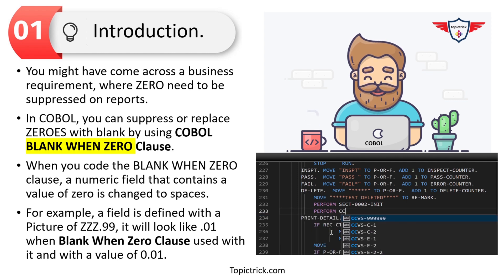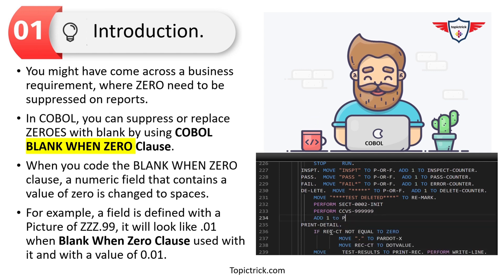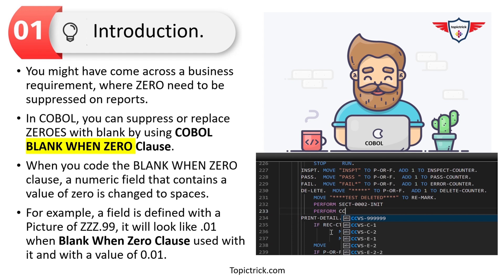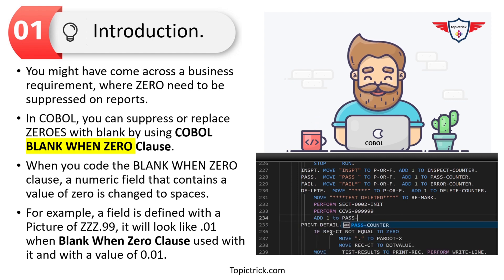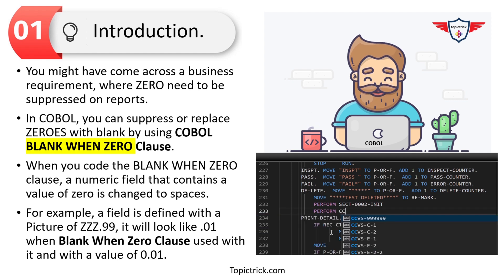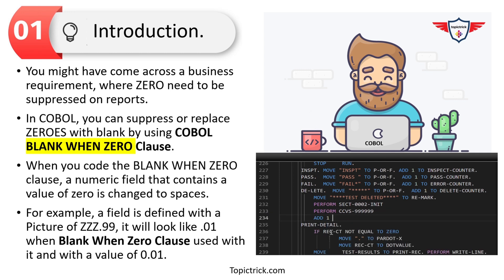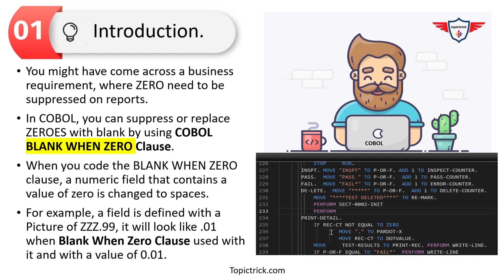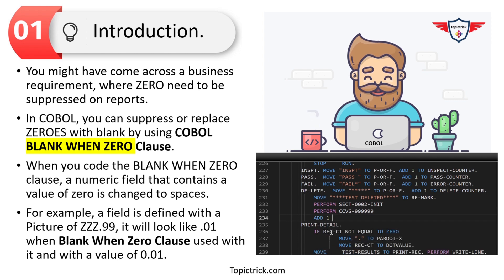You can use this clause with numeric fields and numeric editable fields, which are generally used to reformat data before it is displayed on reports or screens. For example, if you define an editable picture clause ZZZ.99 with BLANK WHEN ZERO and assign a value of 0.01, the report will display .01 — the leading zero has been replaced with spaces.